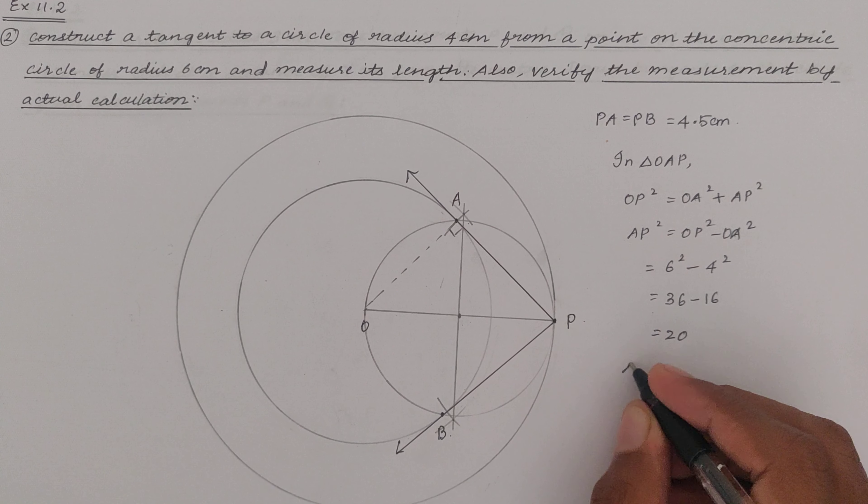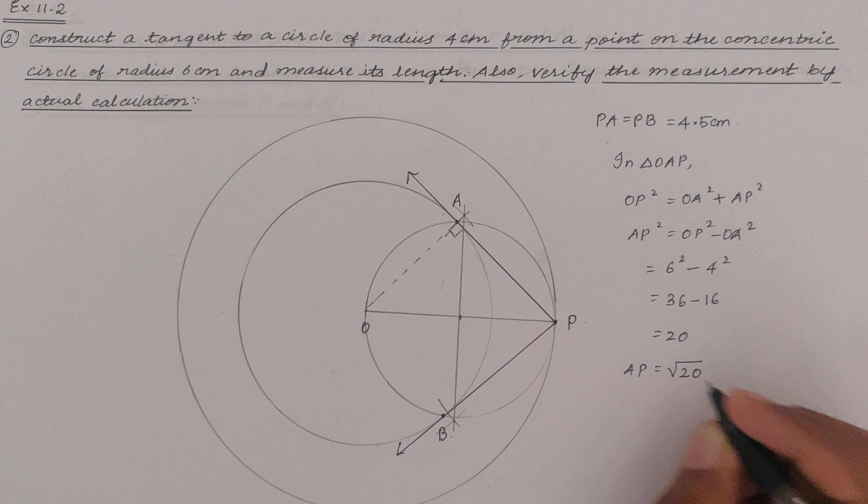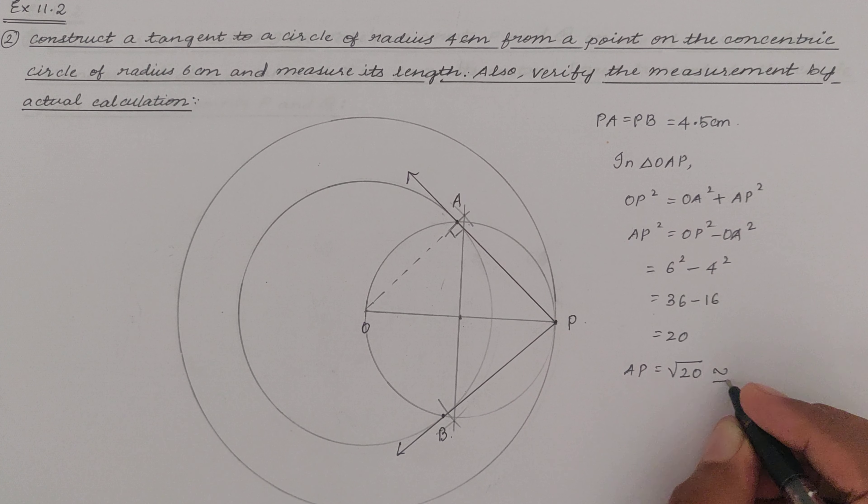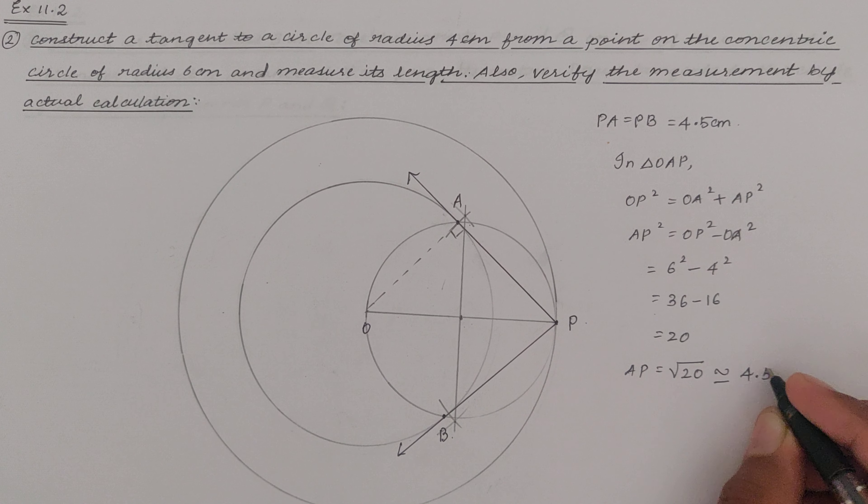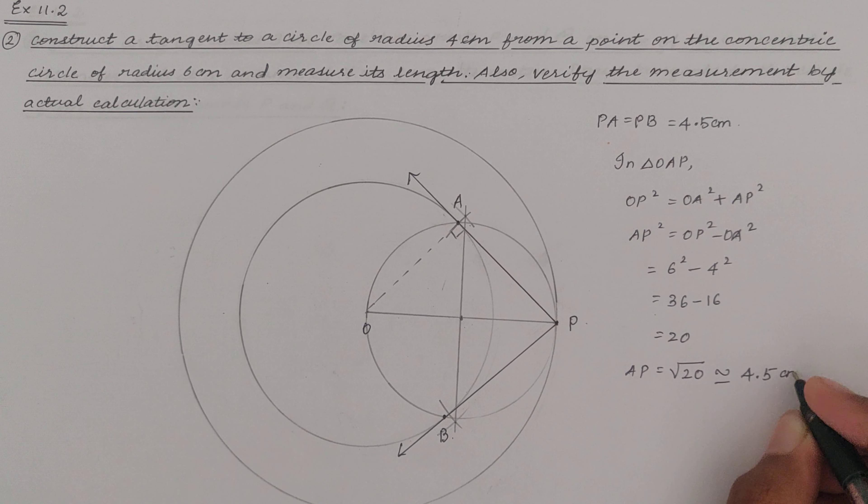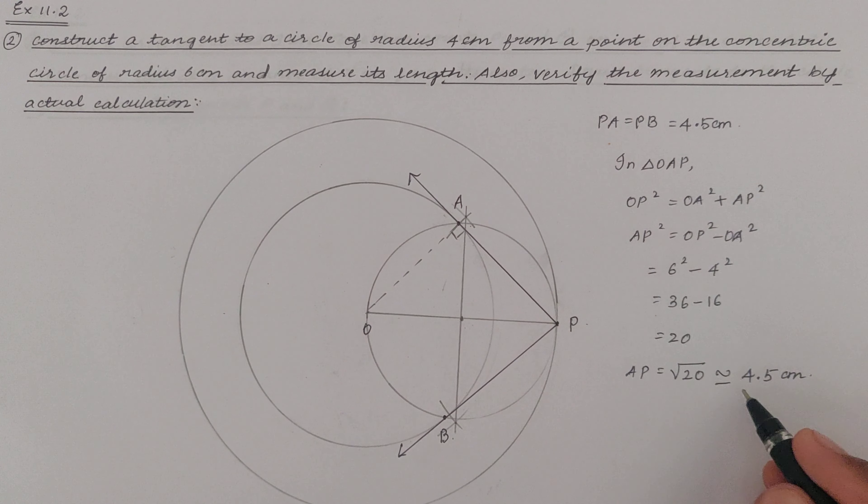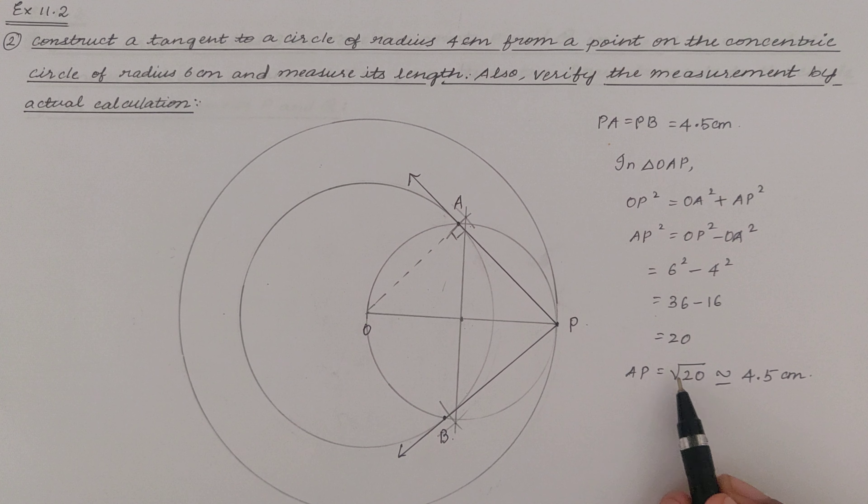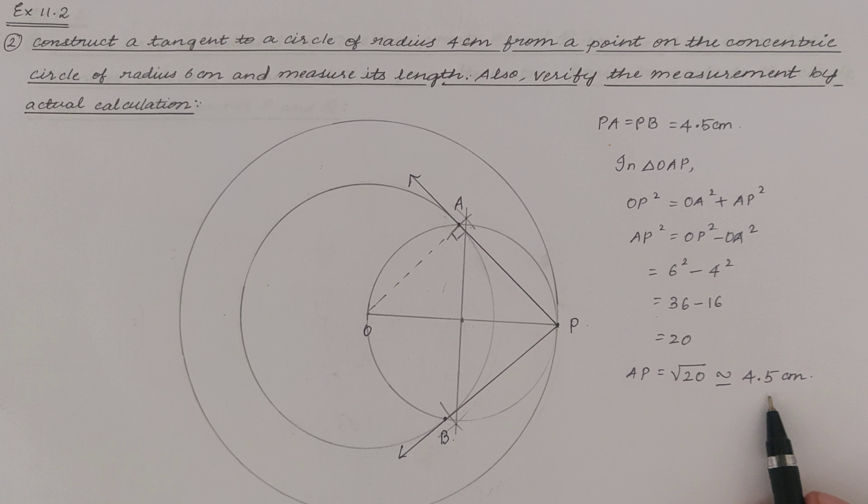So if AP square is 20 then AP will be equal to root of 20 which will be approximately equal to 4.4 or 4.5 and that is what we have got using our construction also. So this is how we do this. So root of 20 can be calculated as 4.5 centimeters.